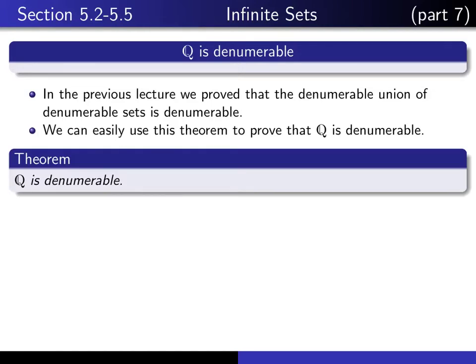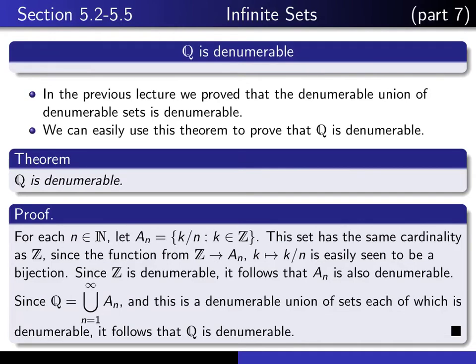So here's the statement of the theorem. And here's the proof. The idea is we have to figure out how to write the set of rational numbers as a union of sets, each of which is denumerable, and it should be a denumerable union of sets.